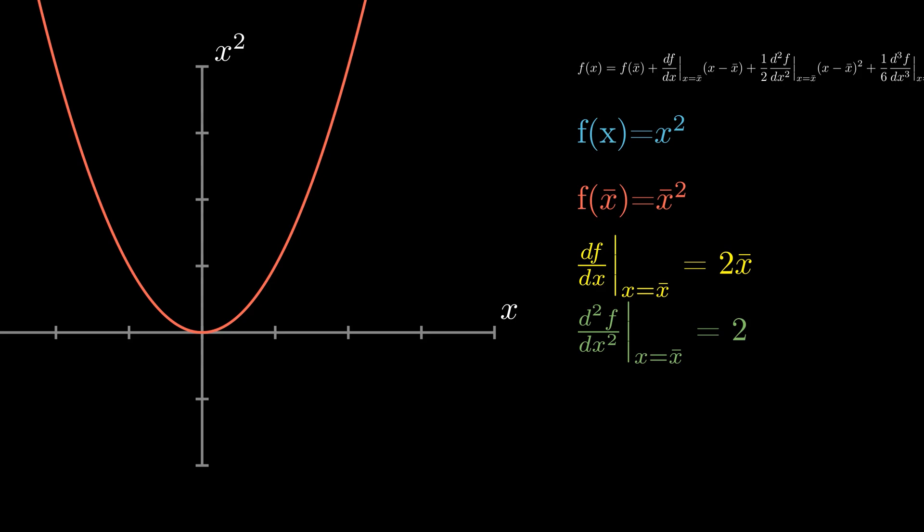And when we substitute that back in, our third term there will be 2 over a half, so those two will cancel and we'll just get (x - x̄) squared.